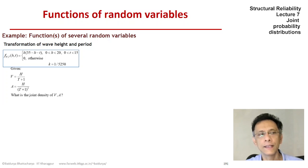And let's just define two variables, v and a. As you see on the screen, they have units of velocity and acceleration, but they are by no means those quantities. The question is what is the joint density of v and a if the joint density of h and t is as you see on the screen and the relation between h and t and v and a are as given.